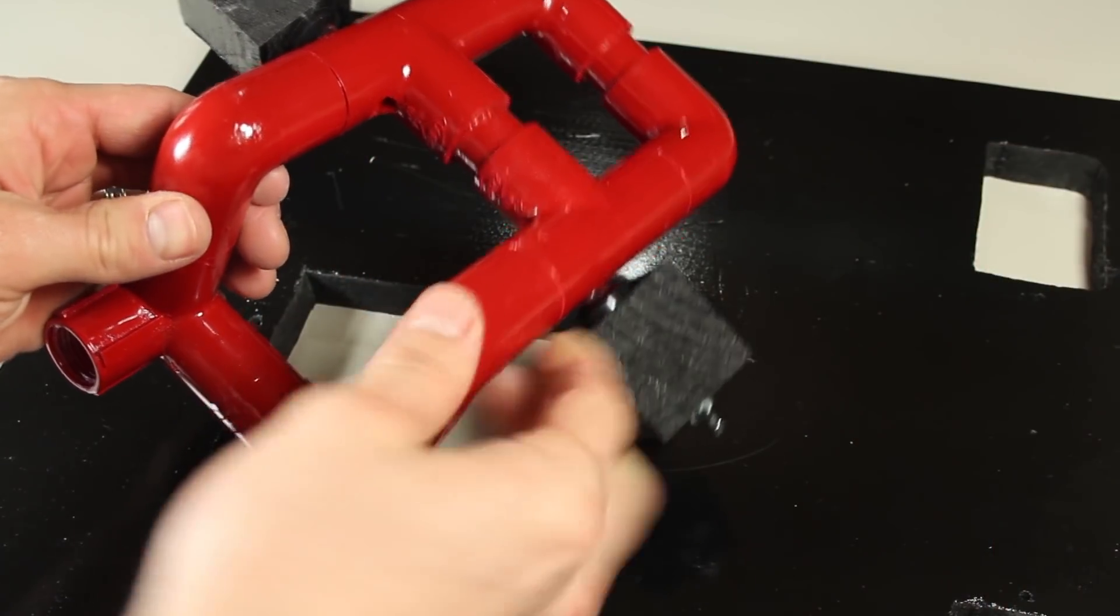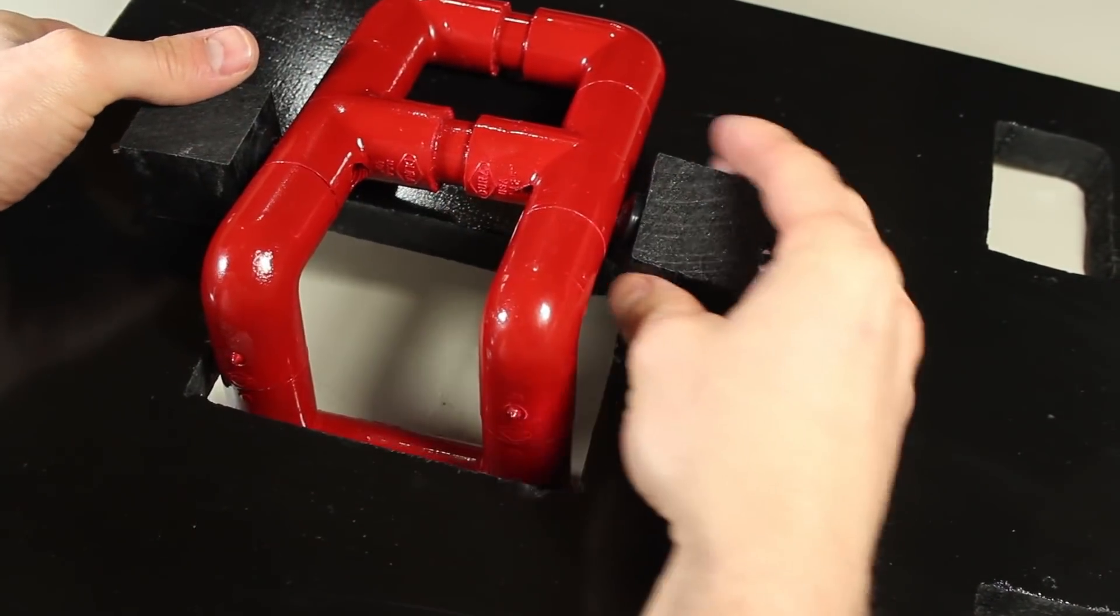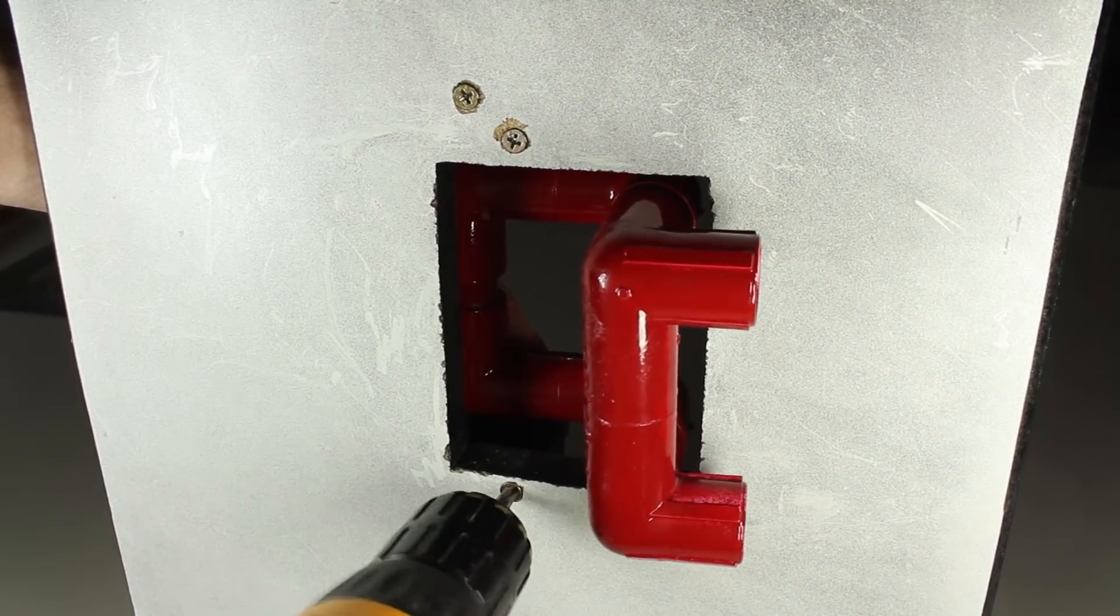Now that our blocks are attached, let's push the bottom part of the handle through the hole, and secure the blocks to the board using the screws we lined up earlier. At this point, we're ready to wire up the electrical, and this is how it's going to look when it's finished.